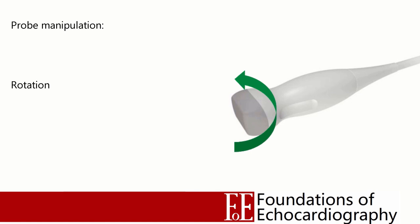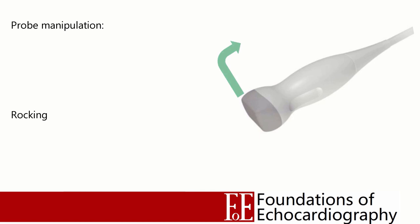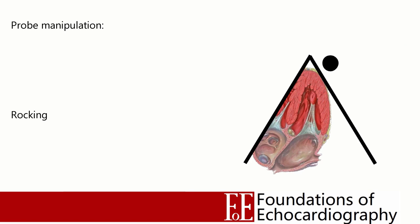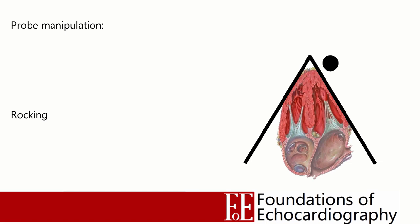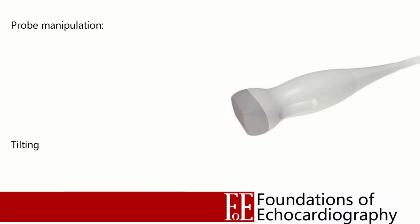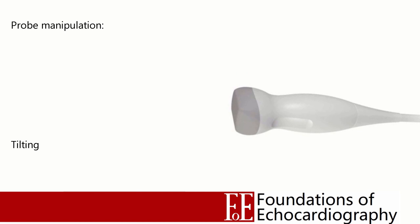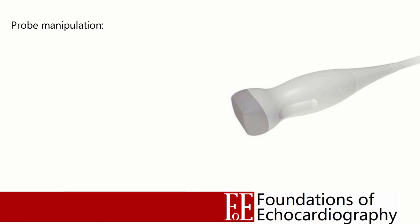Secondly we have rotation. Rotation is around the central axis of the probe and will either be clockwise or anti-clockwise. Third we have rocking. Rocking is parallel to the orientation marker and will cause the image within the sector to swing — for example, this is the motion required to centralise the septum in the apical four chamber view. The final probe manipulation is tilting. This is a movement of the probe perpendicular to the orientation marker and allows you to see in different planes.